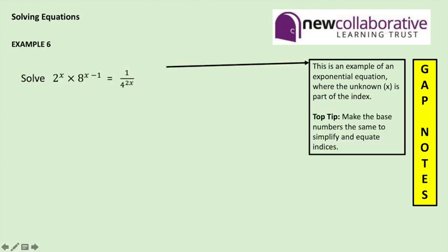In example 6, this is an example of an exponential equation where the unknown is part of the index. And the tip with these questions is to try to make the base numbers all the same.